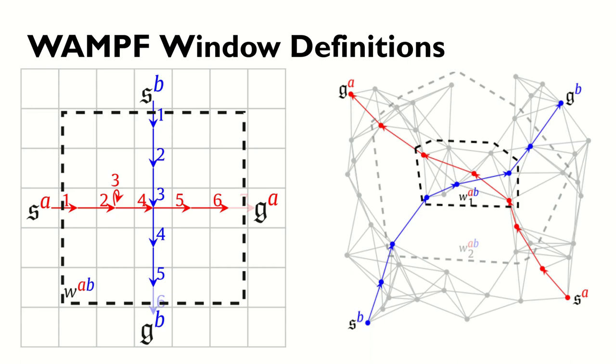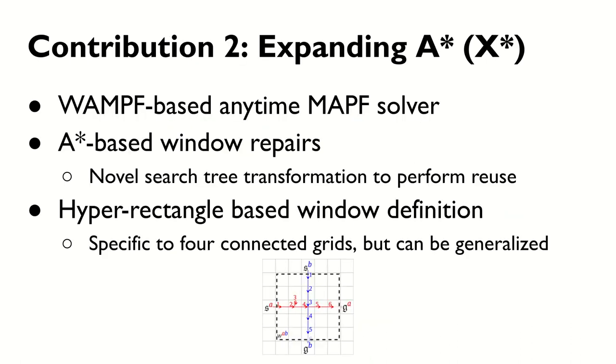Our second contribution is Expanding A*, or simply X*, a WAMPF-based MAPF solver. X* uses an A*-based window repair solver along with a novel search tree transformation to leverage WAMPF's reuse properties in order to speed up successive path generation. In our experimentation, X* uses a hyper-rectangle-based window definition, as shown in the example below, but this definition is not fundamental to X* and can be adapted to any other domain.